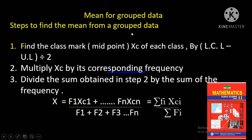The midpoint formula is: xc equals lower class limit plus upper class limit, divided by two. Then multiply each midpoint xc by its corresponding frequency. Next, divide the sum of the frequency-midpoint products by the total sum of frequencies to obtain the mean.